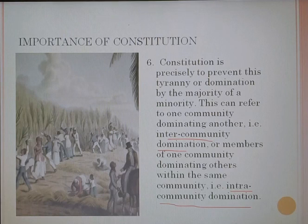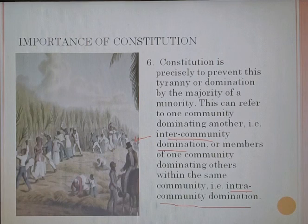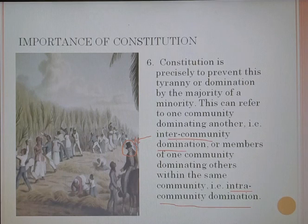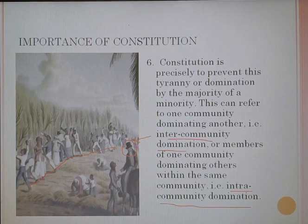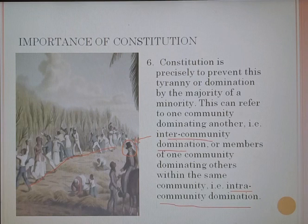Here is a picture illustrating inter-community domination. In this picture, a person from the white community is present while people of the black community are walking in the field. The white community is dominating over the black community — this picture represents inter-community domination.